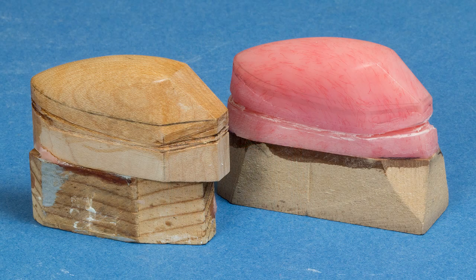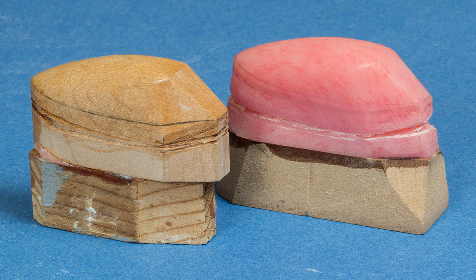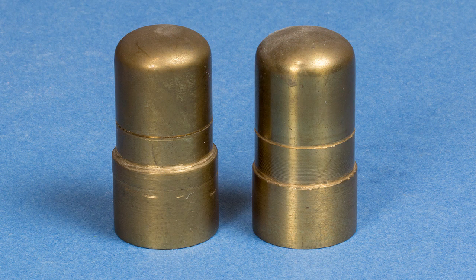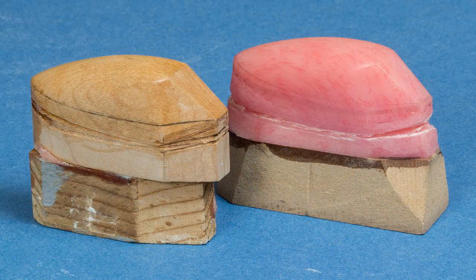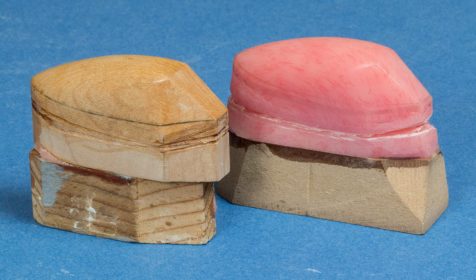The first step in the vacuum forming process is the creation of the form. The form can be made from hardwood or other hard materials that can withstand the stress of the heated plastic sheets. The ideal material is polished metal, like these that I use to form turrets. Note that the forms are elevated so that there is plenty of room for the plastic sheet to drape over the sides.